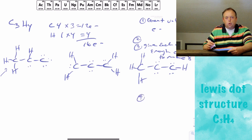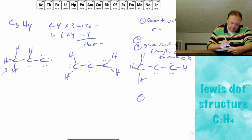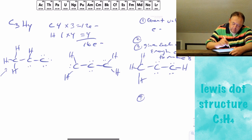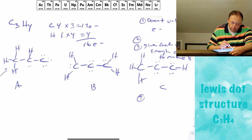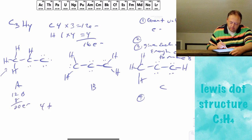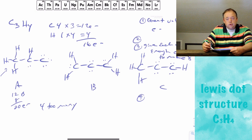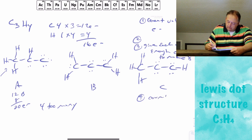The fourth step is to count the total number of electrons. For structure A, there are 6 bonds — that's 12 electrons in bonds — plus 8 electrons in lone pairs, giving 20 electrons total. That's 4 too many. Structures B and C each also have 4 too many electrons. We're supposed to have 16, so we have 4 too many.